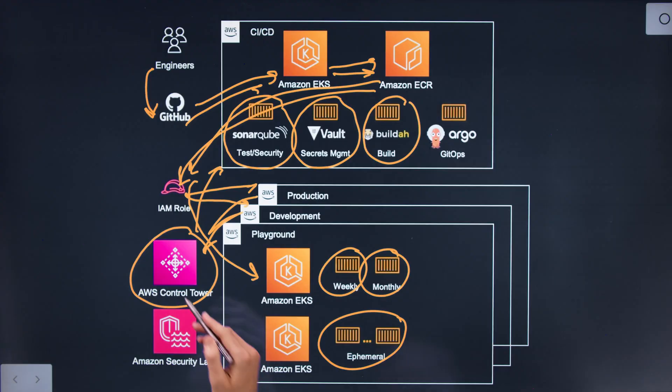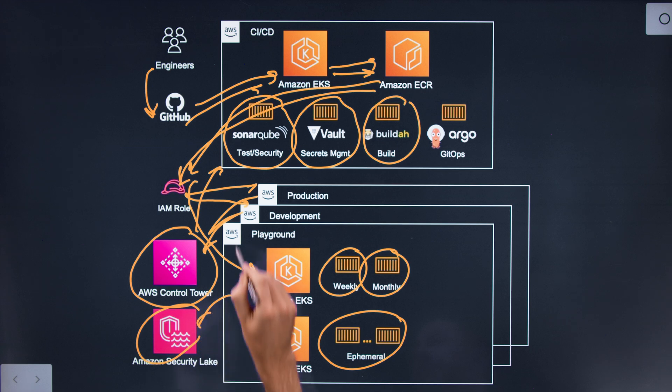We talked earlier about our 14 accounts and that number is going to grow. Amazon Security Lake allows us to pull in logs from all these different environments and manage them all in one place. It wraps up GuardDuty, wraps up VPC flow logs, and allows us to see everything in a centralized location within our security account. It aggregates all these different services, and there's no increased cost for extra accounts, but we do get the extra value of having segregated workloads.